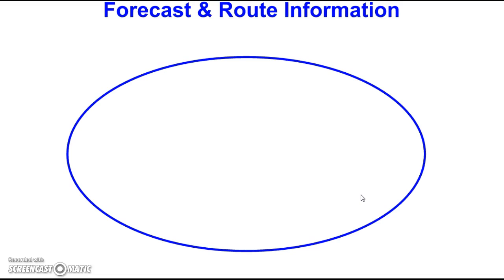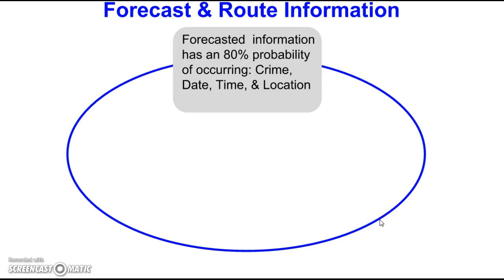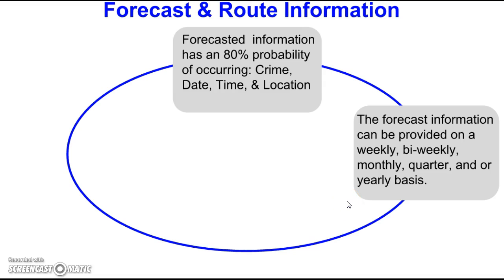The most important things you should have when it comes to predictive policing are your forecast information and your route information. These two parts are the most critical. If you're missing one, you will not be able to successfully attain the required results. Forecast information is very important because it gives you the best chance to put your resources on the right location at the right time, and I can provide this information with an 80 percent probability — on a weekly, bi-weekly, monthly, quarterly, or even yearly basis.